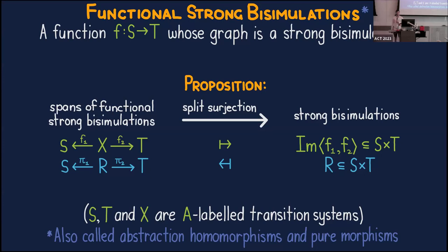Later in the talk I'm going to talk about a notion of weak bisimulation, which involves a special silent action tau. This terminology is from Milner's Communication and Concurrency — I'm not going to say a lot about the weak ones but there's a reason why I've made this distinction. We have this way of viewing strong bisimulations as equivalence classes of spans of functional strong bisimulations, and this is well known in a number of different contexts where people study bisimulations.